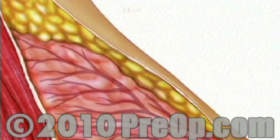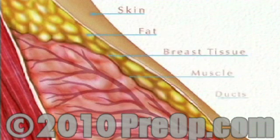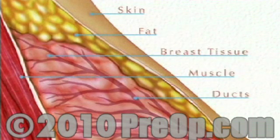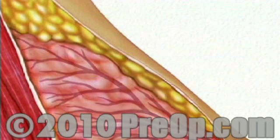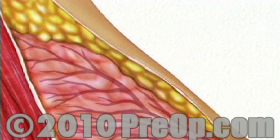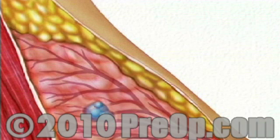The breast is made of layers of skin, fat, and breast tissue, all of which overlay the pectoralis muscle. Breast tissue itself is made up of a network of tiny milk-carrying ducts. There are three ways in which a lump can form. Among them, most women experience periodic changes to their breasts.